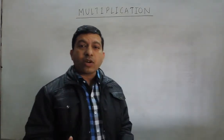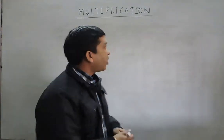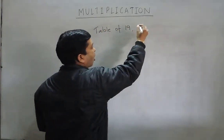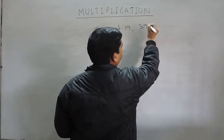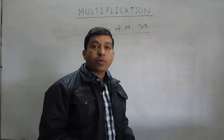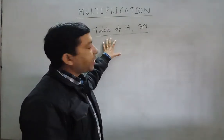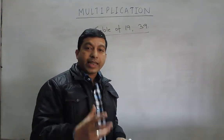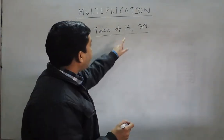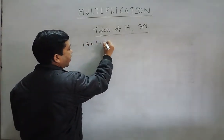Now the question arises: how many of the people who have seen the first two multiplication parts know the table of 19? When I say a table of 19 or a table of 39, people find that they have not learned those tables in class, so they do not know. But believe me, all the students, all the people watching this video, know the table of 19 — they just don't know that they know it.